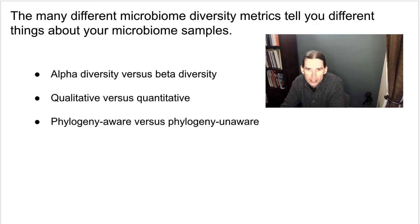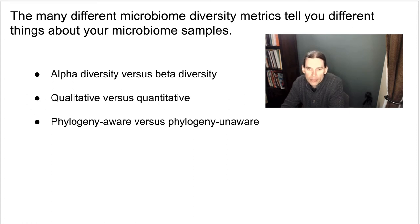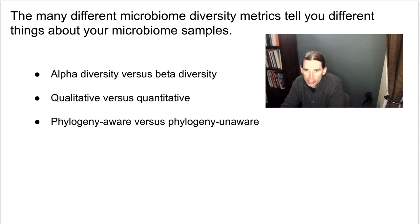Present or absent is typically defined by the count: a count greater than zero indicates a feature was observed, and a count of zero indicates it was not observed. Quantitative metrics, on the other hand, incorporate those counts in the diversity computation. The qualitative alpha diversity metrics we talked about were observed features and Faith's phylogenetic diversity. A common quantitative alpha diversity metric that's used is Shannon diversity.